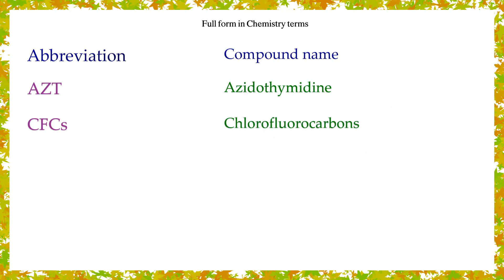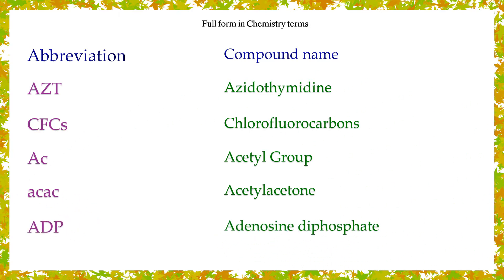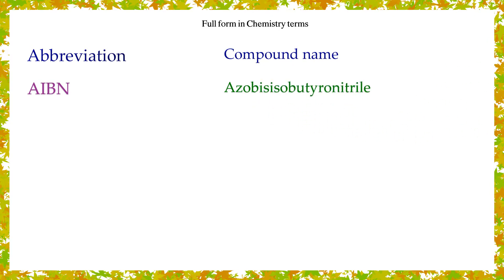CFCs: chlorofluorocarbons. AC: acetyl group. ACAC: acetylacetone. ADP: adenosine diphosphate. AIBN: azobisisobutyronitrile.